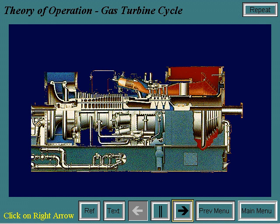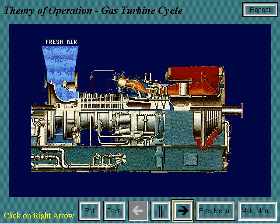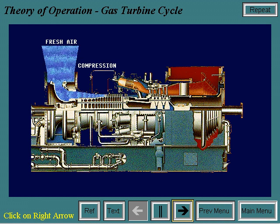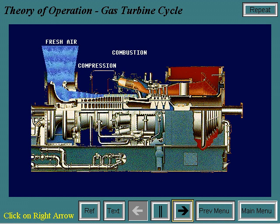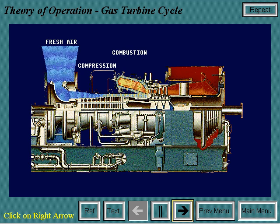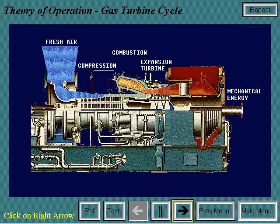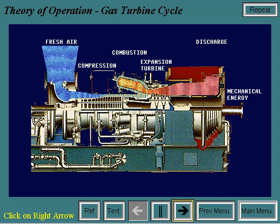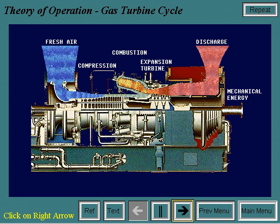A gas turbine operates by drawing in fresh air, then compressing it to a higher pressure through its axial flow compressor. Next, fuel is added to the compressed air and burned, which raises the energy level. This high-pressure, high-temperature air is then sent to an expansion turbine, where the gas energy is converted to the mechanical energy of a rotating shaft.